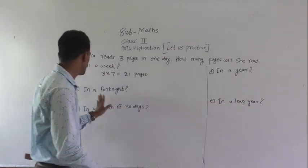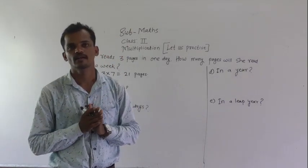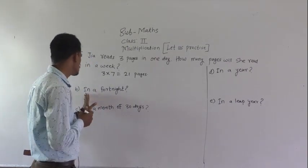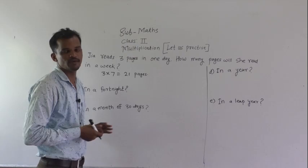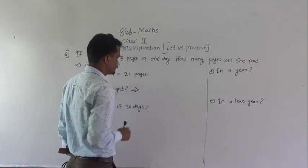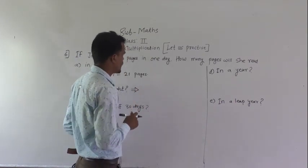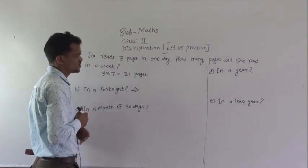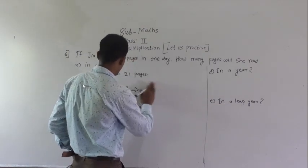Now in a fortnight. What do we mean by fortnight? Fortnight means 14 days. Remember this. How many pages will she read in a fortnight, which means 14 days? Fortnight means 14 days and in each day she reads 3 pages. So, 3 multiplied by...